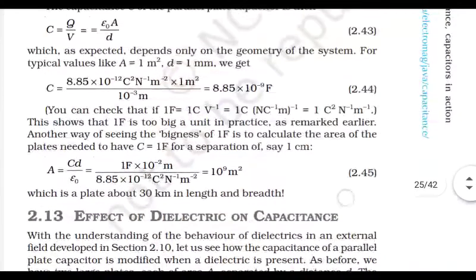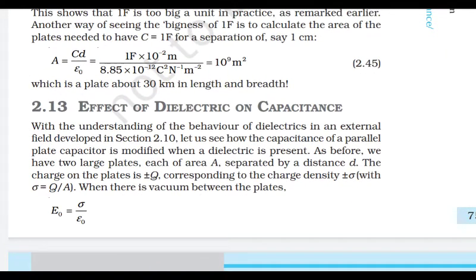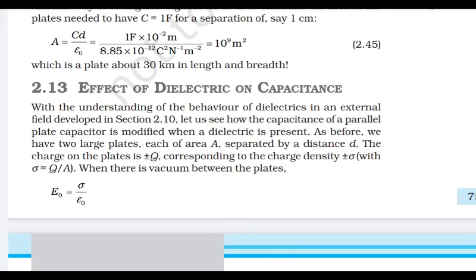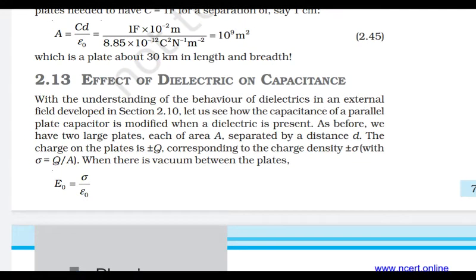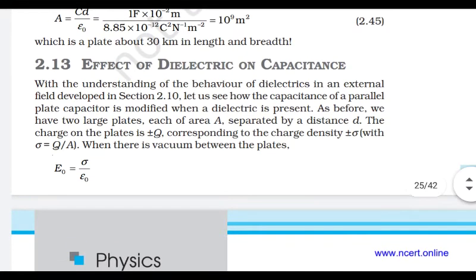Now, the effect of dielectric on capacitors. We know a capacitor is simply a parallel plate system with vacuum in between. What happens if we place a dielectric — an insulator — between the plates? The dielectric can be polar or non-polar, as we studied earlier. We'll see how the capacitance of a parallel plate capacitor is modified when a dielectric is present between the plates.